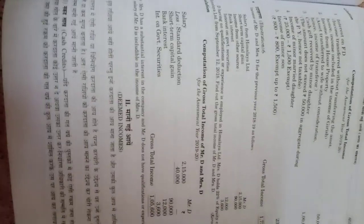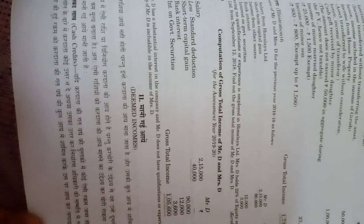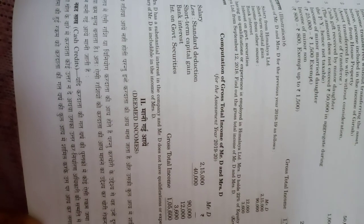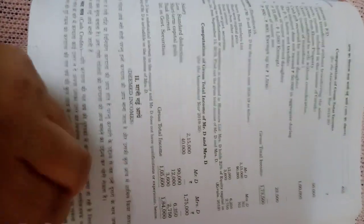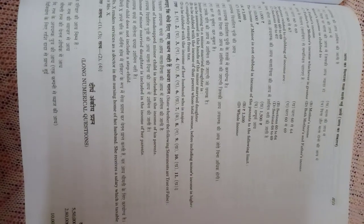So this is all about aggregation of income. We have seen two topics here: clubbing of income and deemed incomes. With the help of an example we have also seen the provisions. I will give you the solutions of the questions in your book. In case you find any problem in the solutions, you can ask me on WhatsApp. Thank you so much.